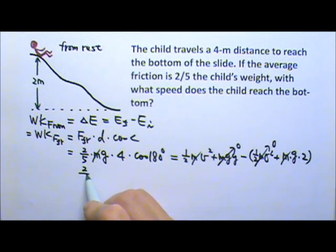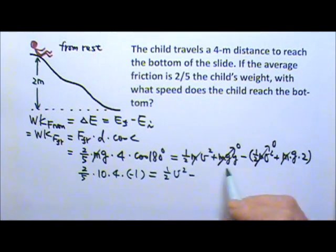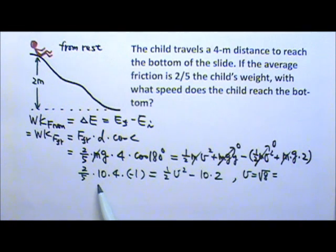So this over here is 2 fifths times g times 4, cosine 180 is negative 1. And then on this side, I have 1 half v squared minus g, 10 times 2. If you solve for v, you'll get v is square root of 8, which is about 2.83 meters per second.